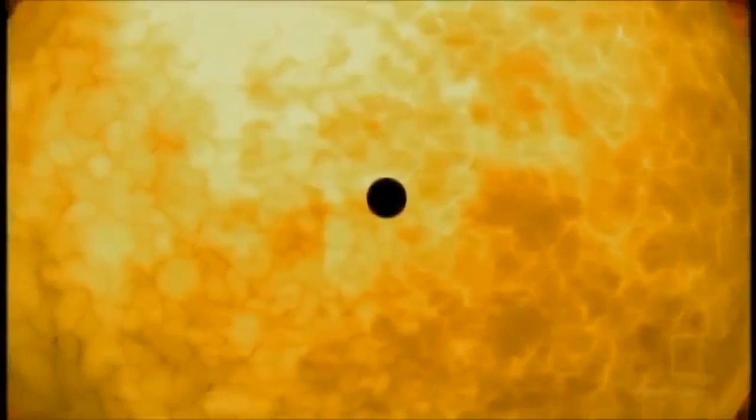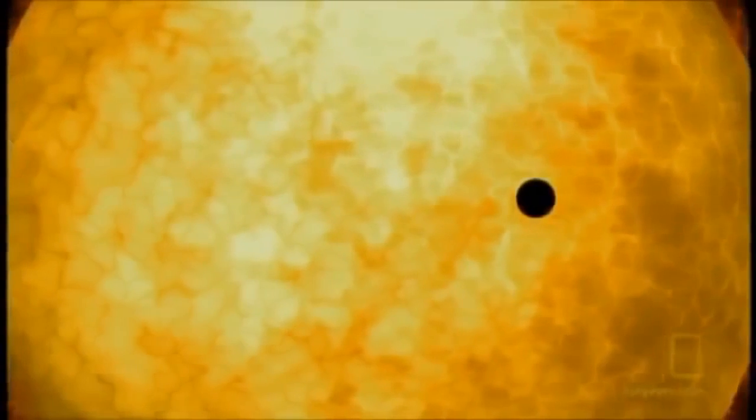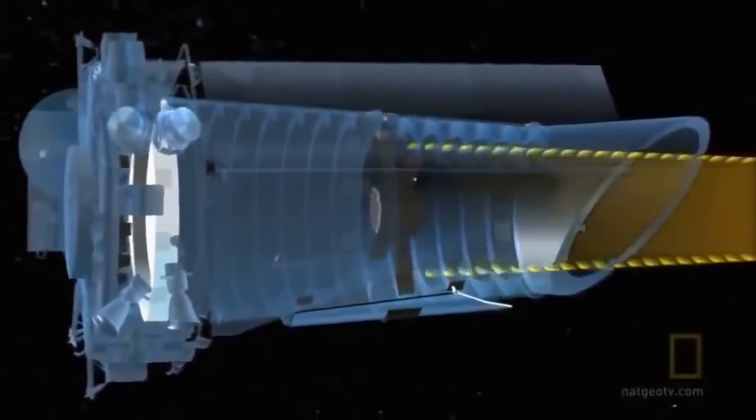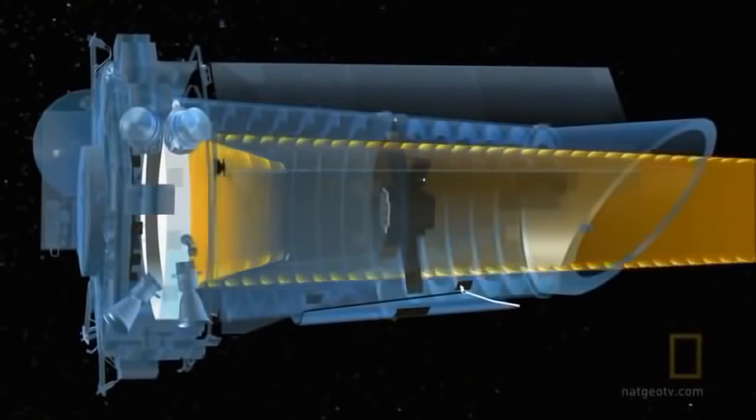When a star dims slightly, it means a planet passes in front, blocking some of the light. How long the star dims and how much light gets blocked will tell scientists about the size of the planet and the distance from its sun.